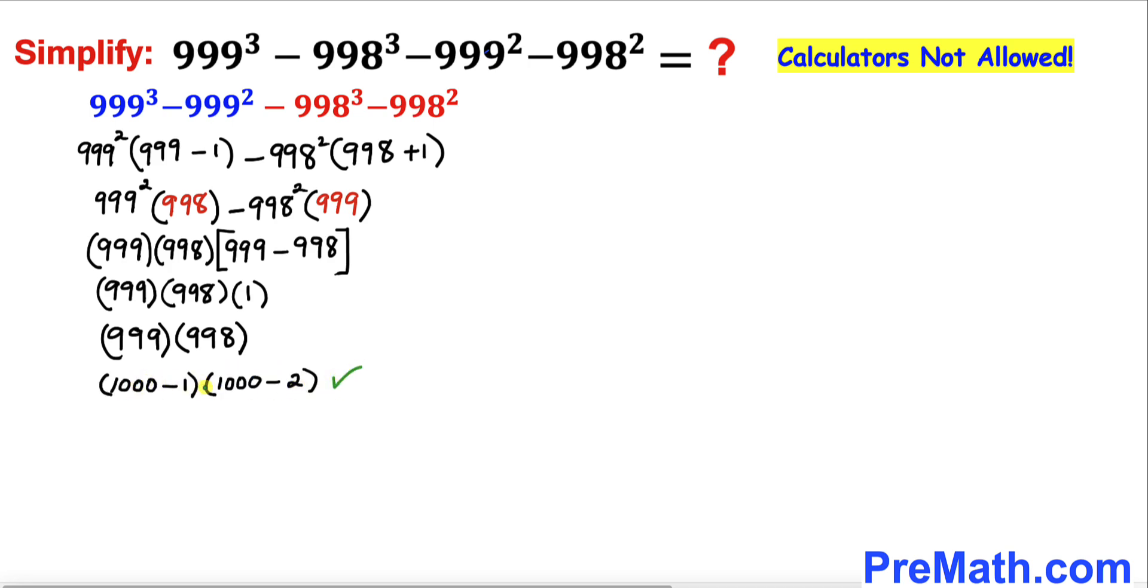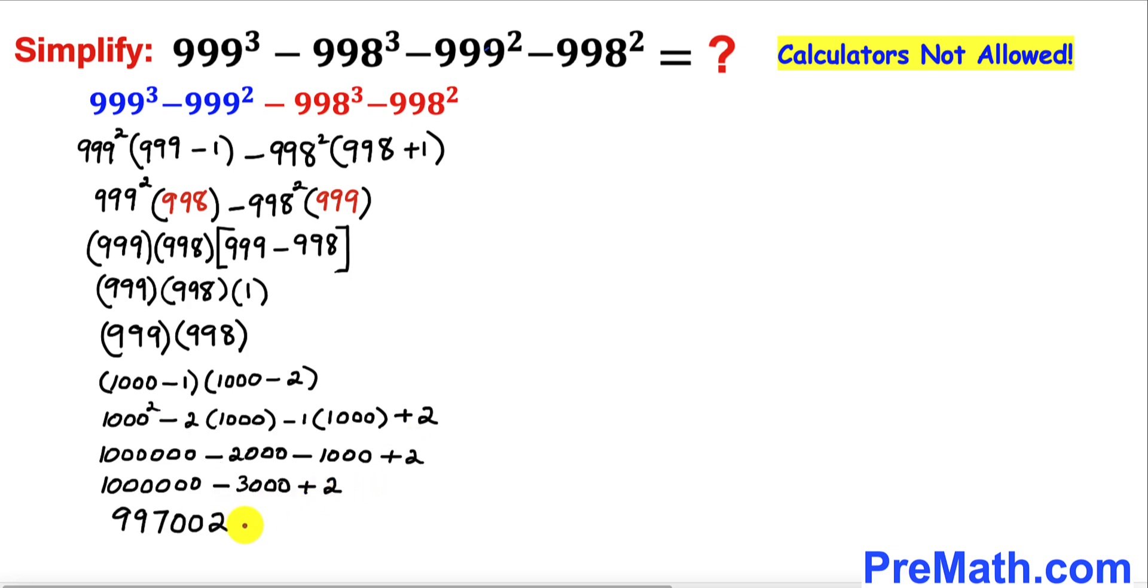Now let's multiply these two factors by simply double distribution. Here 1000² is the same as 1 million, and -2000 and -1000 is going to give us -3000 and then +2.